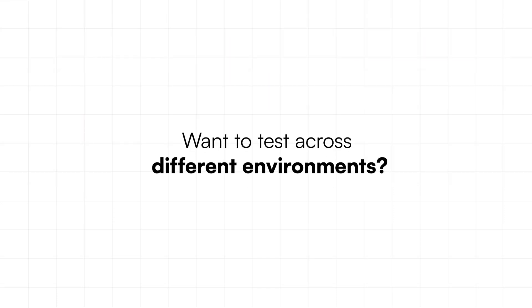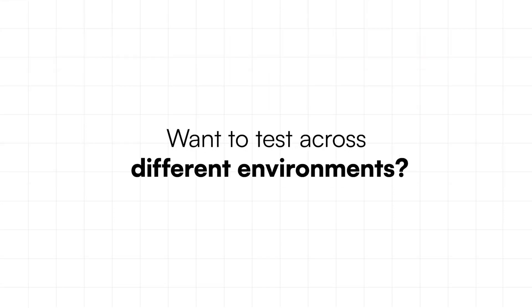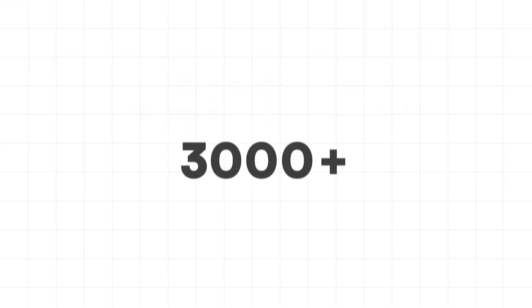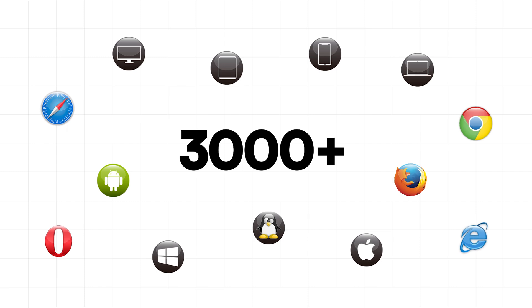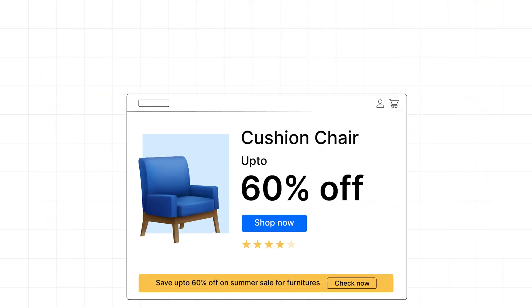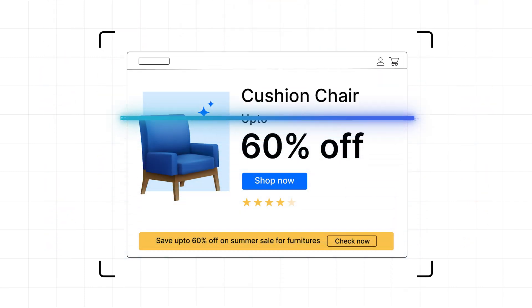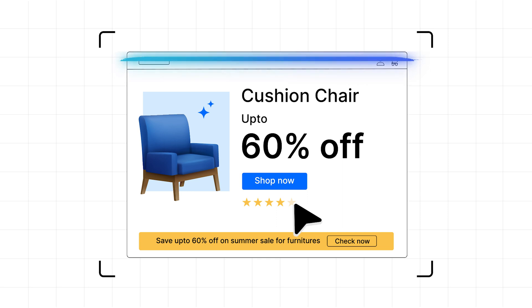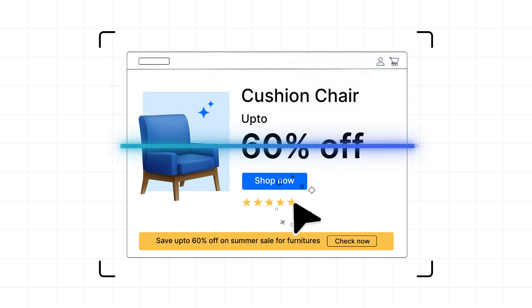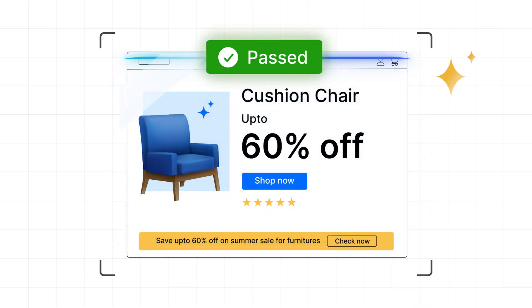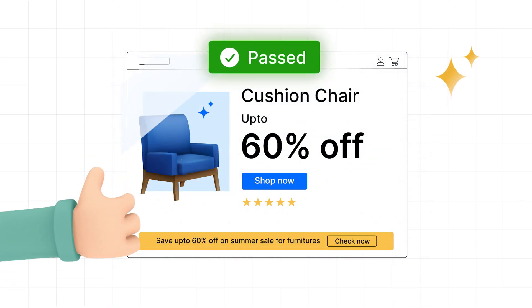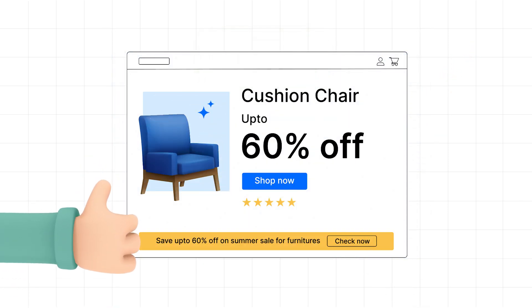Want to test across different environments? You can test against 3000-plus device and browser combinations your applications are used on. Improve your test coverage by running both functional and visual tests in one run and ship quality software at scale with confidence.